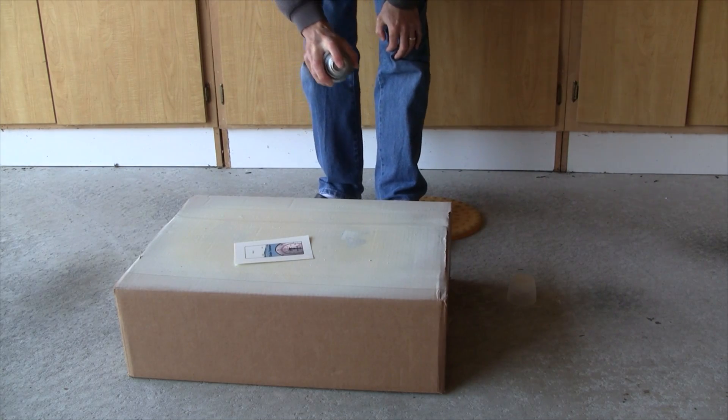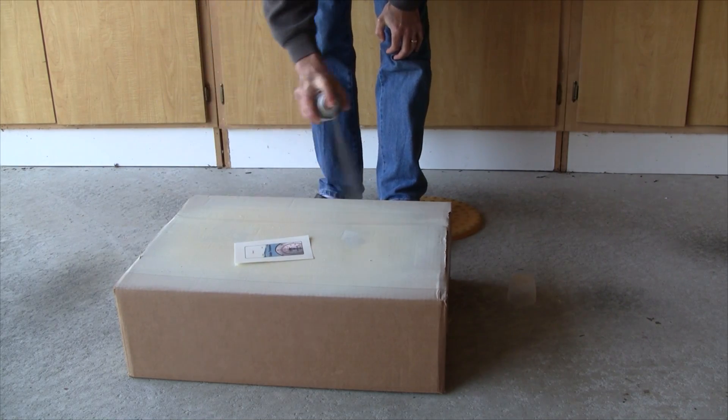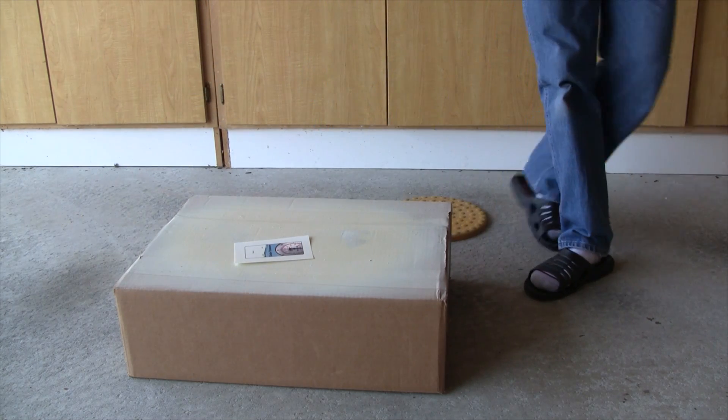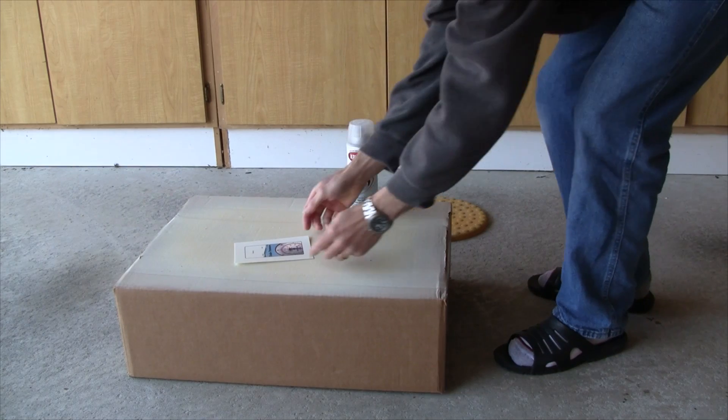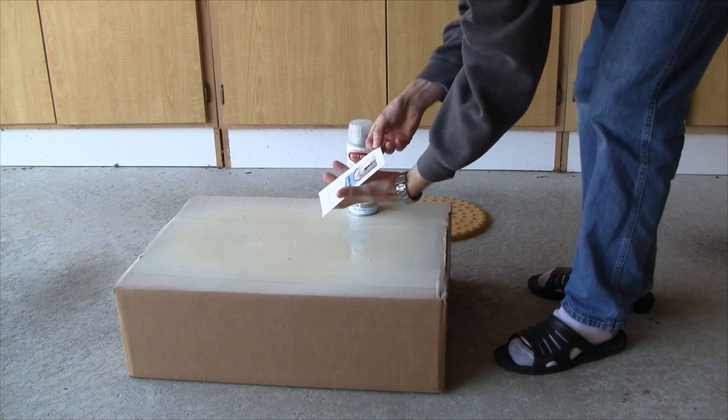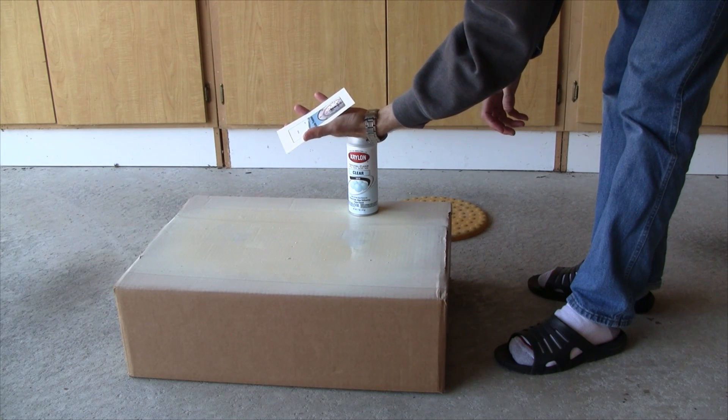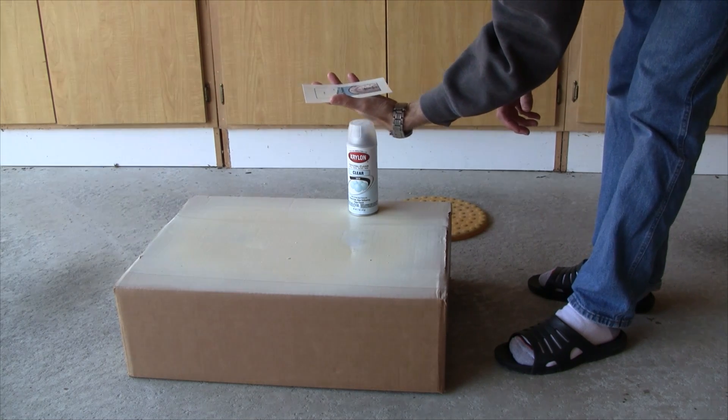Now you'll notice that when I spray, I start a few inches off the side of the paper and then spray until it goes past the other side of the paper so you don't get any big wet spots. Now a good way to check if you're getting even coverage is to look at the paper with a low angle light across it. I'm just using the sun. That makes it really easy to see if you've missed anything.